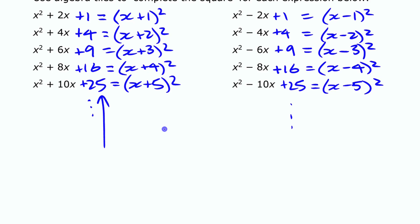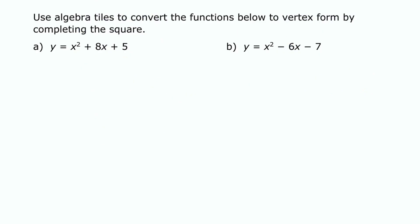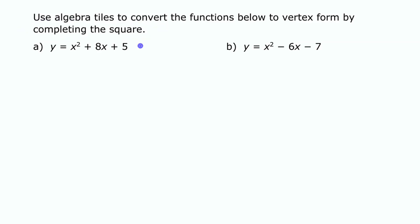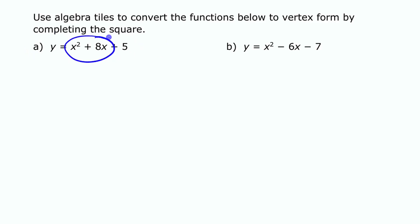That's an introduction to what it means to complete the square — recognizing this pattern of what number needs to be added to an expression to turn it into a perfect square trinomial that can be written as the square of a binomial. The next step is to take this process and apply it to change quadratic functions given in standard form into vertex form. We'll start with the first example and flip over to the algebra tiles to model it.